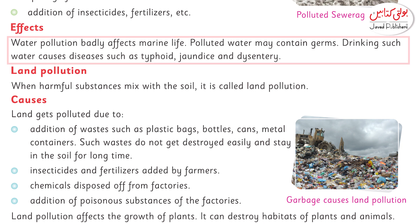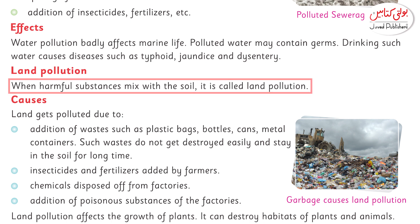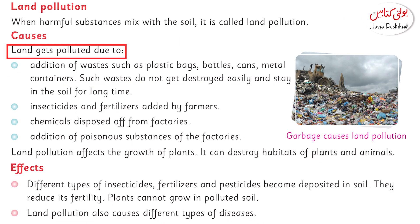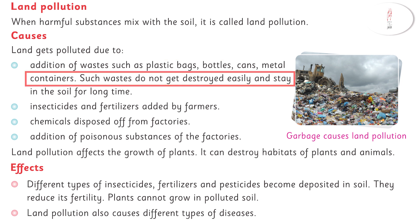Now let's talk about land pollution. When harmful substances mix with the soil, it is called land pollution. Land gets polluted due to the addition of waste such as plastic bags, bottles, cans, and metal containers. Such waste does not get destroyed easily.